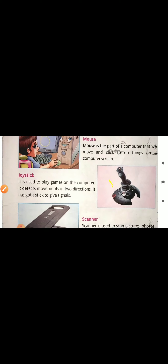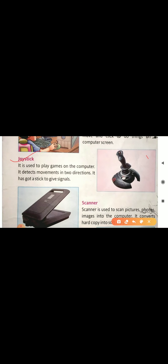Next we have the joystick. Here is a picture of a joystick. Joystick is a device used to play games on the computer. It detects movement in two directions and has got a stick to give signals. For example, in a car racing game, if you move the joystick to the right, the car moves right; if you move it to the left, the car moves left.